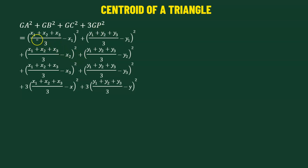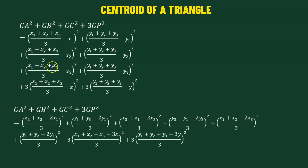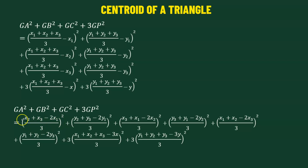We can further simplify each expression within the parentheses. For example, (x1 + x2 + x3)/3 − x1 can be rewritten as (x2 + x3 − 2x1)/3. We do this for all terms. We notice there is a factor of 3 in the denominator of each term, and after squaring, that becomes 9, so we can factor out 1/9.